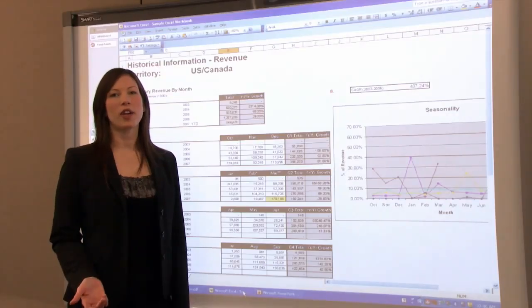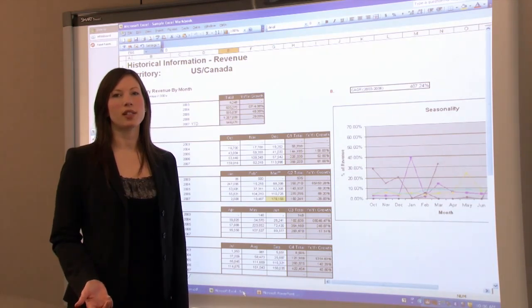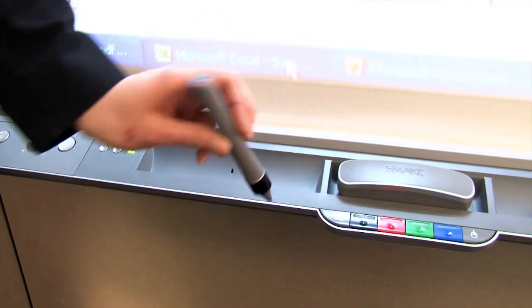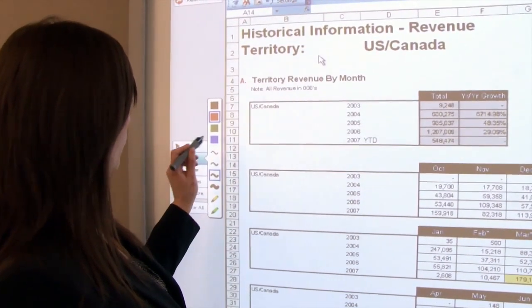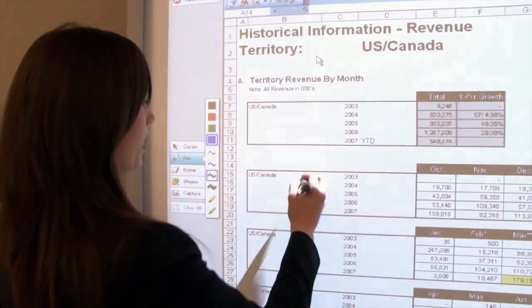Now let's take a look at how you can write notes using a smart collaboration system. All you have to do is pick up a pen from the pen tray. You can select the thickness of your pen, or a different color, and begin making your notes.